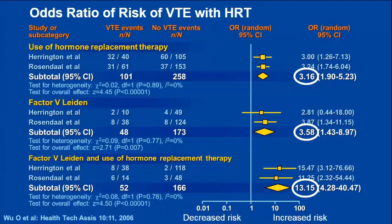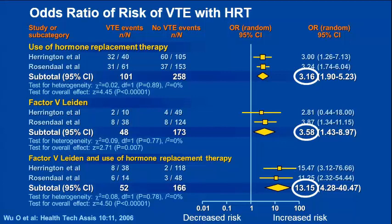This is a well-done meta-analysis of patients exposed to oral hormone replacement therapy. The risk of venous thromboembolism is about three-fold increased. Patients with Factor V Leiden have about a three- to four-fold increase of venous thrombosis. If you have a patient with Factor V Leiden and prescribe hormone replacement therapy, their relative risk of venous thrombosis increases quite significantly. The authors analyzed what this relative risk meant in absolute terms.